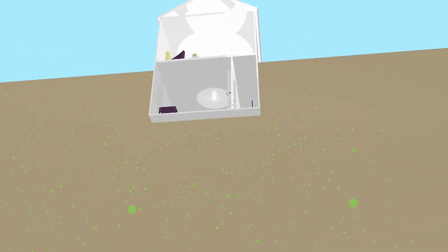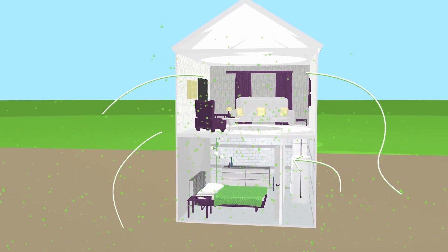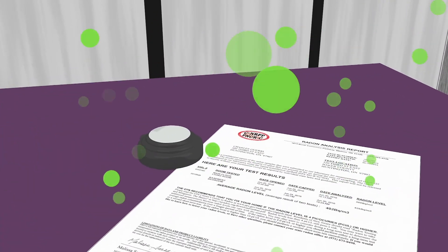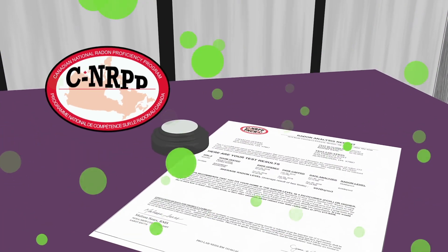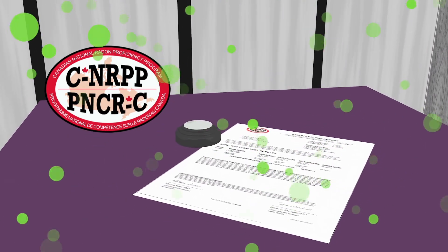All homes have some level of radon. The only way to know if you have dangerous levels is to test. All homes need to be tested. You can do this either through a DIY radon test kit or by having a professional, certified by the Canadian National Radon Proficiency Program, come and test your home.